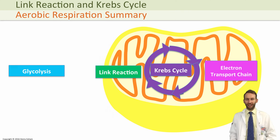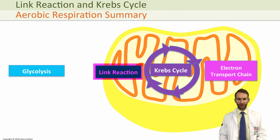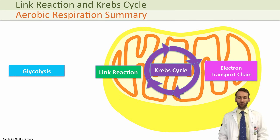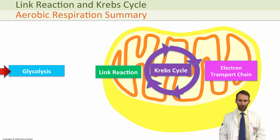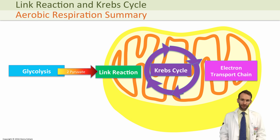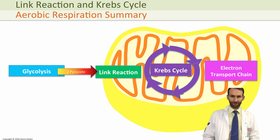The next stage on our aerobic respiration journey is to look at the link reaction and the Krebs cycle. If you recall, at the end of glycolysis, we had made two pyruvate molecules, and these molecules are now going to cross from the cytoplasm into the mitochondria.